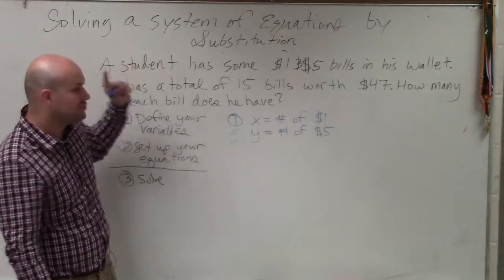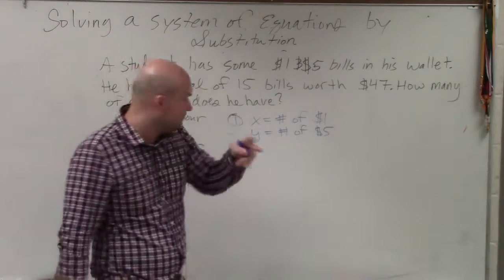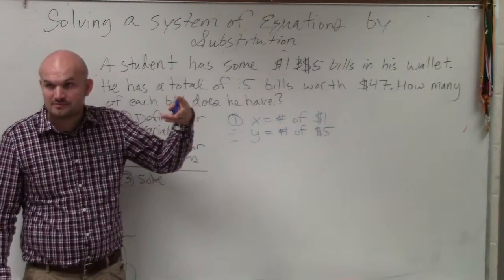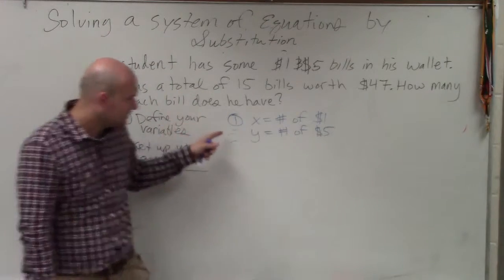So we know there's two things. Now, when you're solving a system of equations, whenever there's two unknowns, two things we don't know, you have to have two equations. So if there's three unknowns, you'd have to have three equations.